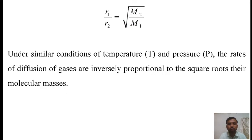Thus from equation 4, Graham's law may also be stated as: under similar conditions of temperature and pressure, the rates of diffusion of gases are inversely proportional to the square roots of their molecular masses.